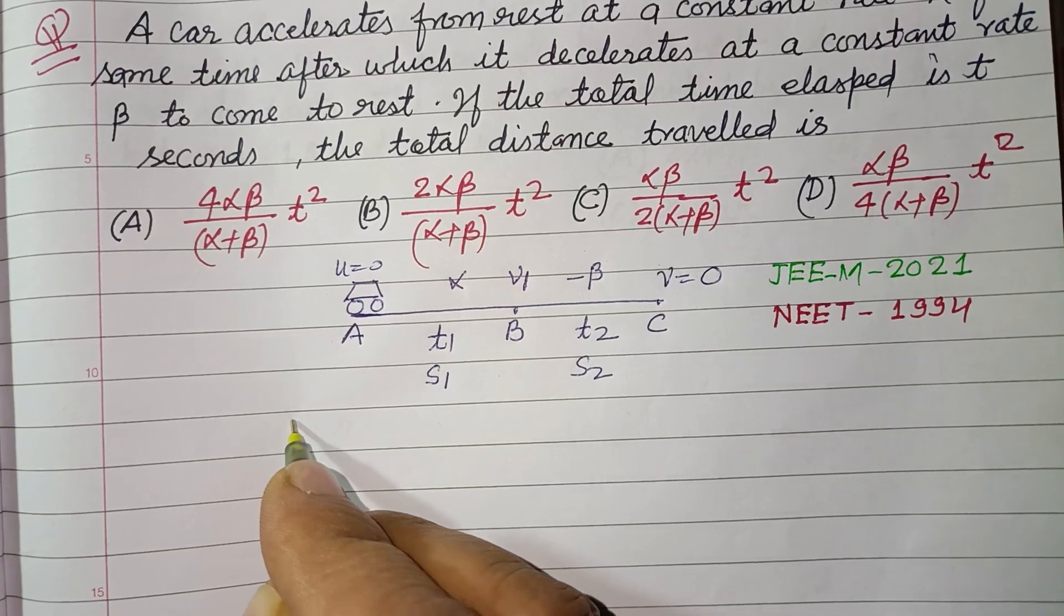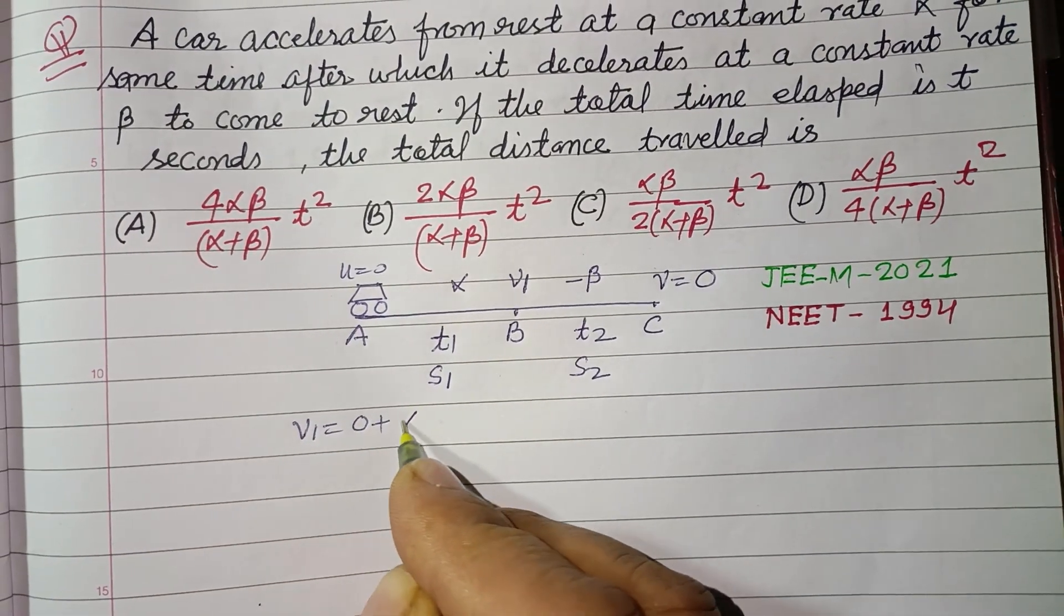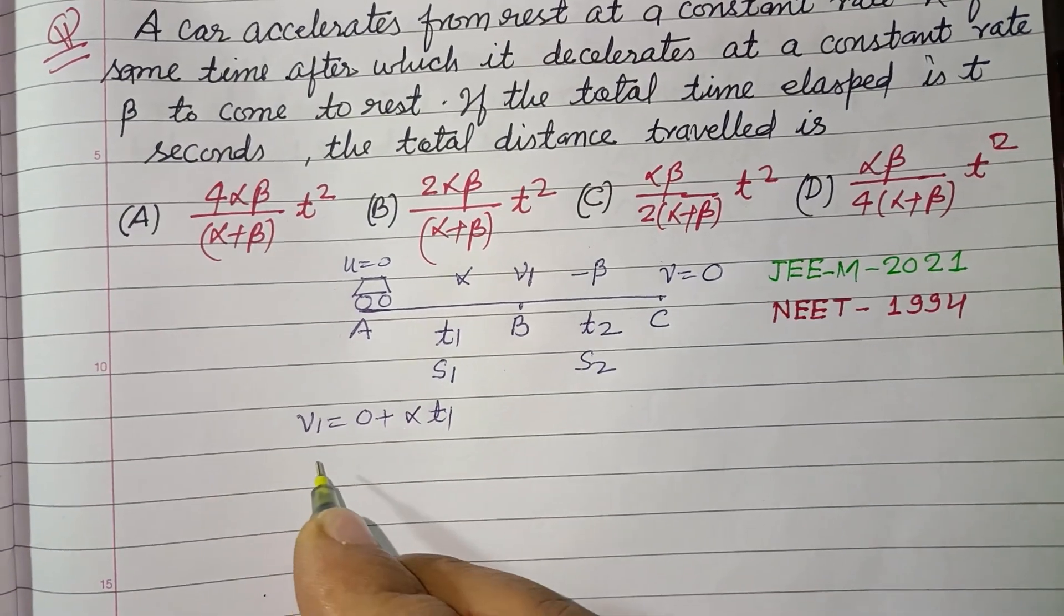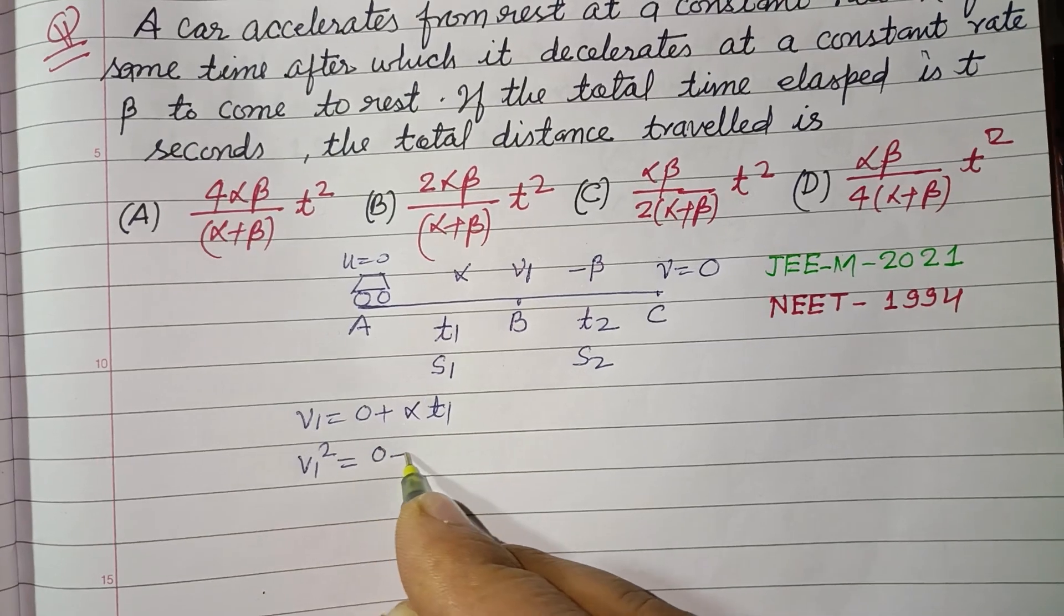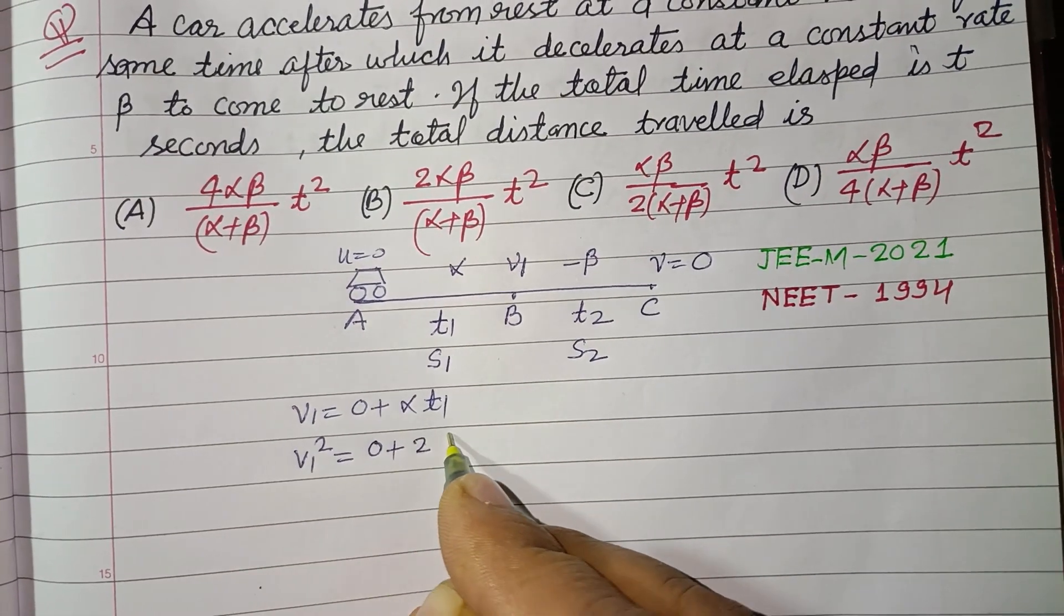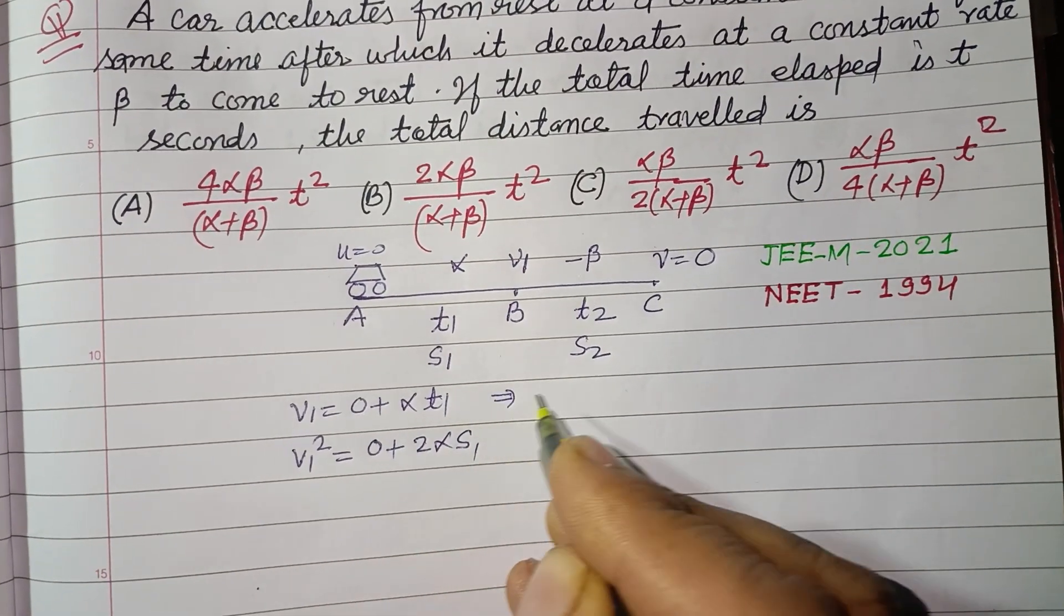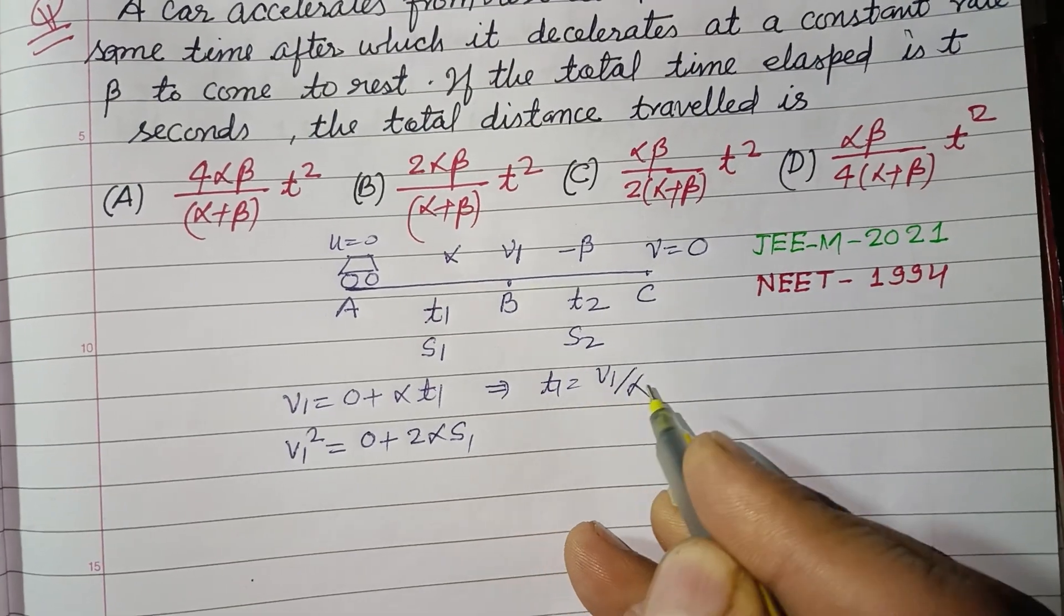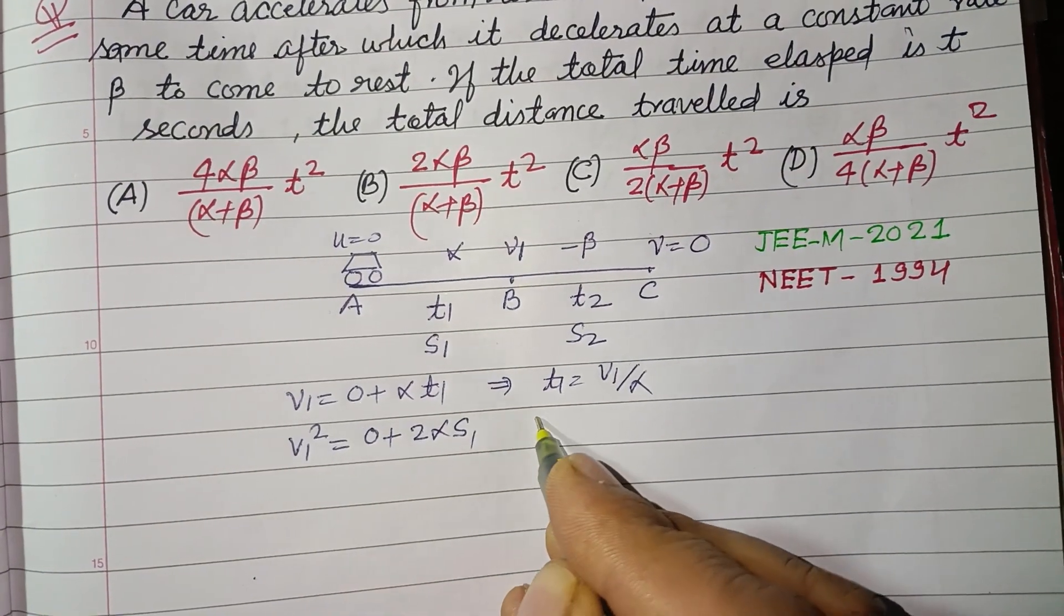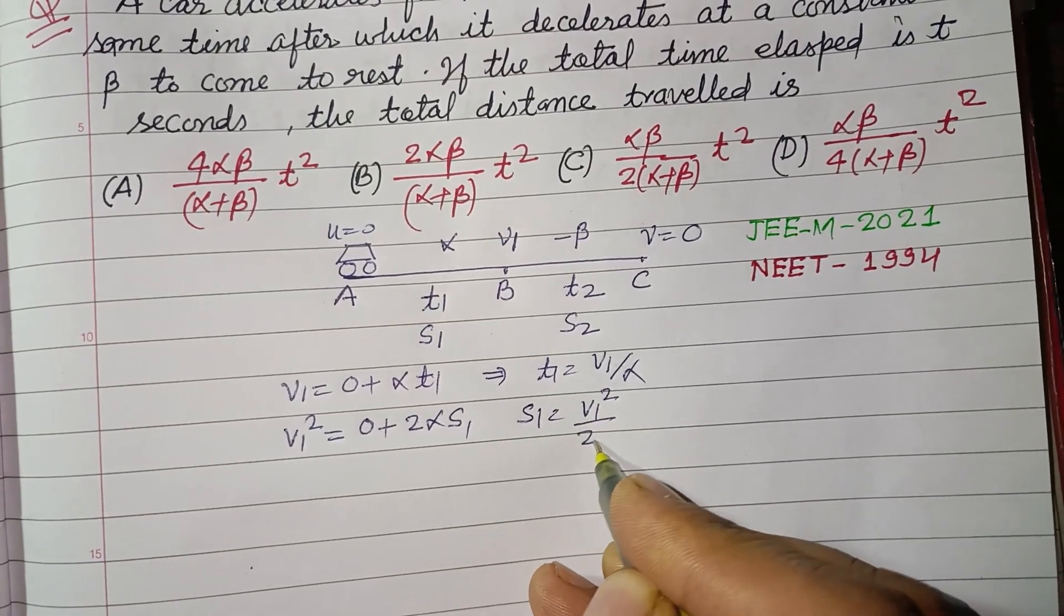Using the first equation of motion: v₁ = u + αt₁, and v₁² = u², which is 0, plus 2αs₁. So from here, t₁ = v₁/α, and from here, s₁ = v₁²/(2α).